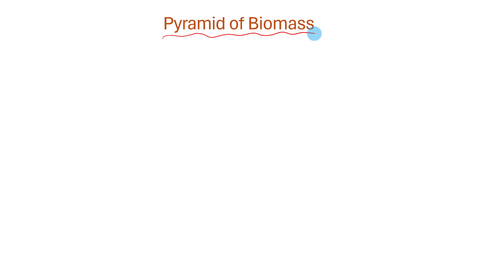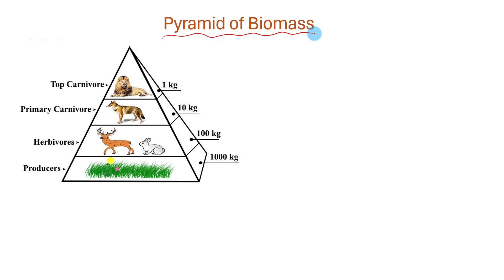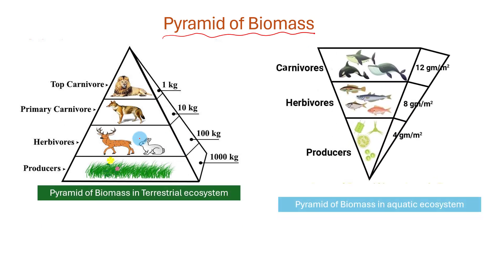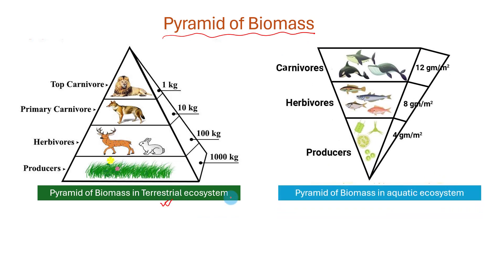Here are two examples of pyramids of biomass. One is for the terrestrial ecosystem and the other is for the aquatic ecosystem.